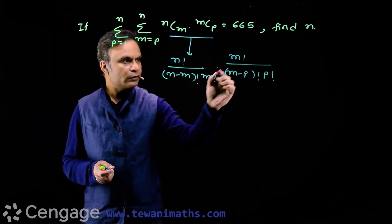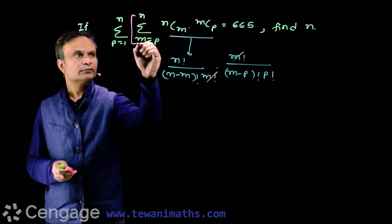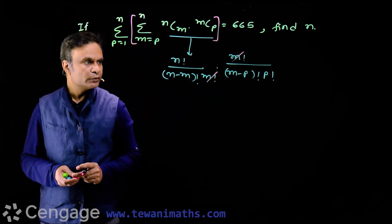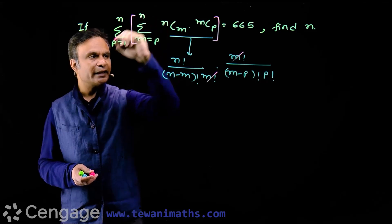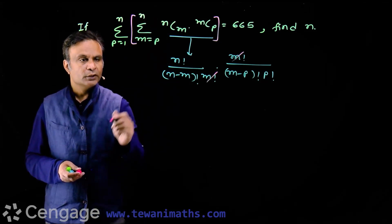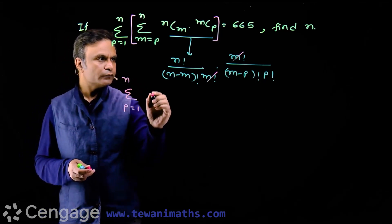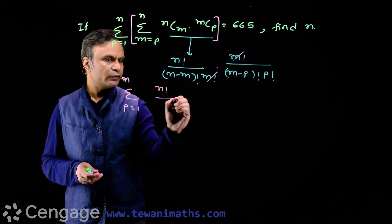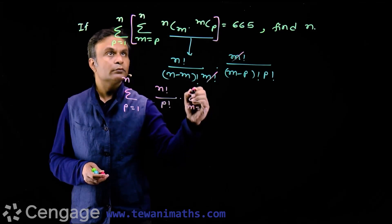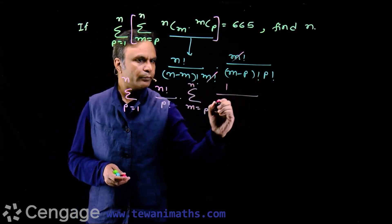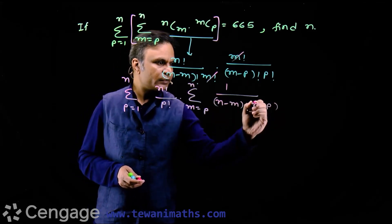Here m factorial gets cancelled out. Now in the first sigma we have variable m, so we keep factorials having m here and take other factorials outside the sigma sign. So we have sigma for p equal to 1 to n of n factorial divided by p factorial, multiplied by sigma for m equal to p to n of 1 over (n minus m) factorial multiplied by (m minus p) factorial.